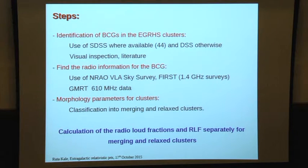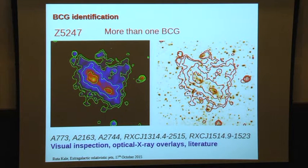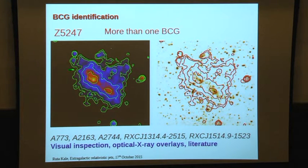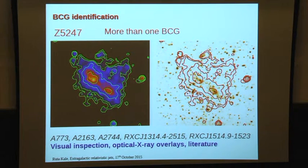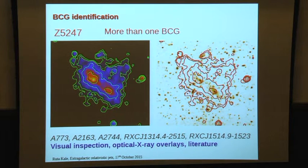The first step is to identify the BCG. If it stands out bright at the center, it's easy. But given the mixture of merging and relaxed clusters, there can be complicated cases — for example, a cluster where two subclusters are going to merge, each with an X-ray peak and a massive galaxy at each peak. In these cases we considered both galaxies as BCGs and included them in our sample. We used all available data to establish which BCGs to consider.